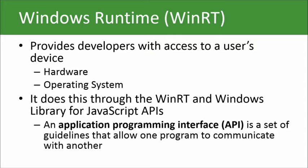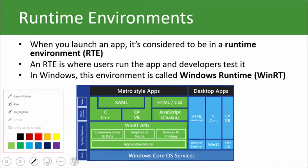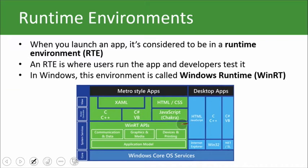So you have access to hardware components like a camera or a GPS system. And you also have access to different services that are provided by the operating system. And it does this through the WinRT and Windows library for JavaScript APIs. Go back, and I just want to focus on this visual real quickly. Here we're going to talk about HTML, CSS, and JavaScript. And you're going to use JavaScript to be able to access these WinRT APIs, which will let you access communication and data services, graphics and media, and then devices, cameras, and also printing services, things of that nature. So keep that all in mind.